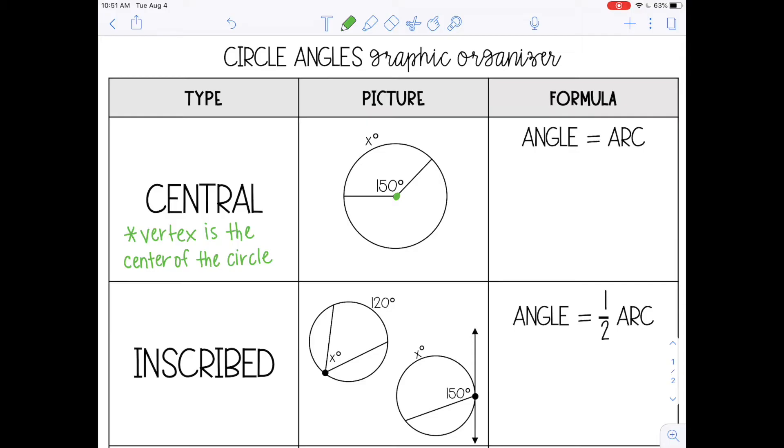And the formula for finding the angle or the arc is the angle equals the arc. The angle and the arc measure are going to be the same. So if my angle is 150 degrees like it shows in this picture, then my arc will also be 150 degrees. The angle and the arc are the same.